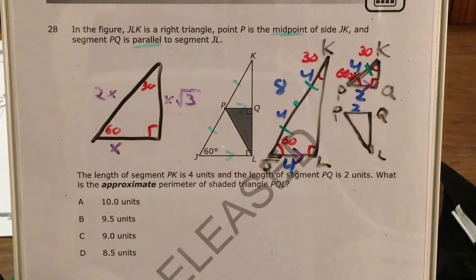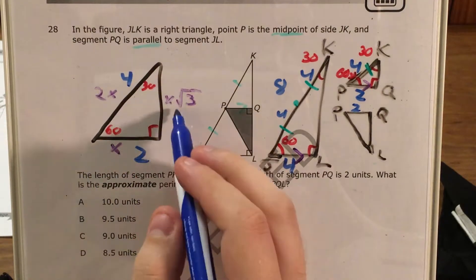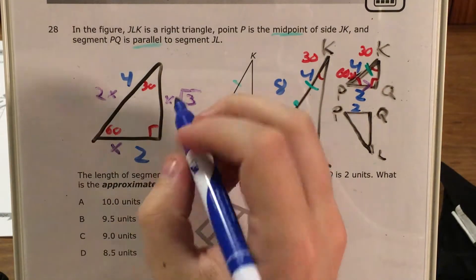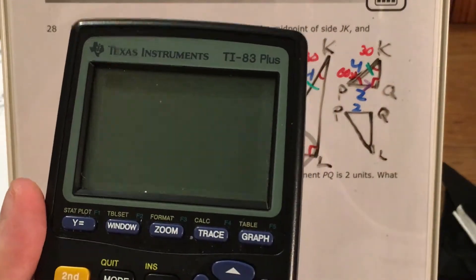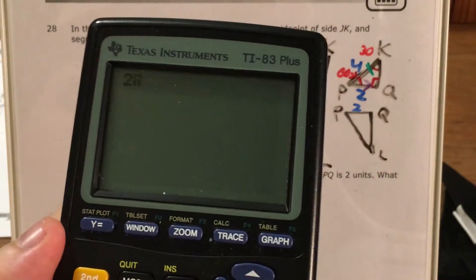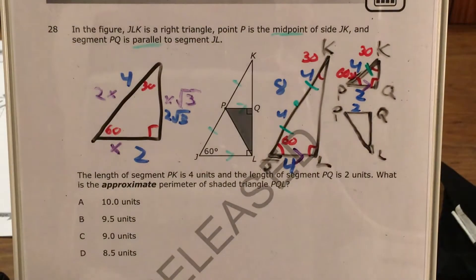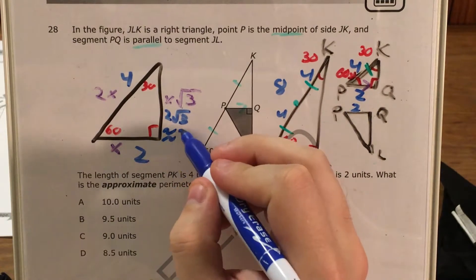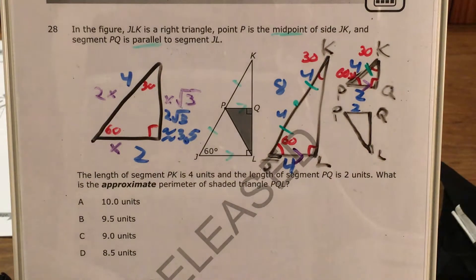And this side over here is gonna be x times the square root of 3. So I can actually use the fact that this side is 2 and this side is 4 to figure this out. So I just need to find out what 2 times the square root of 3 is. So I find my calculator, I do 2 times the square root of 3. That's about 3.46. So about 3.5.